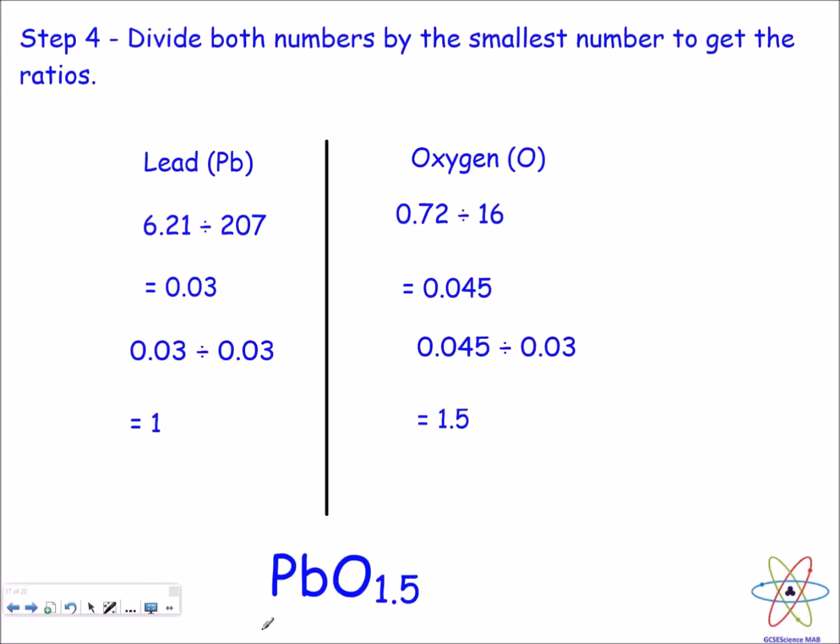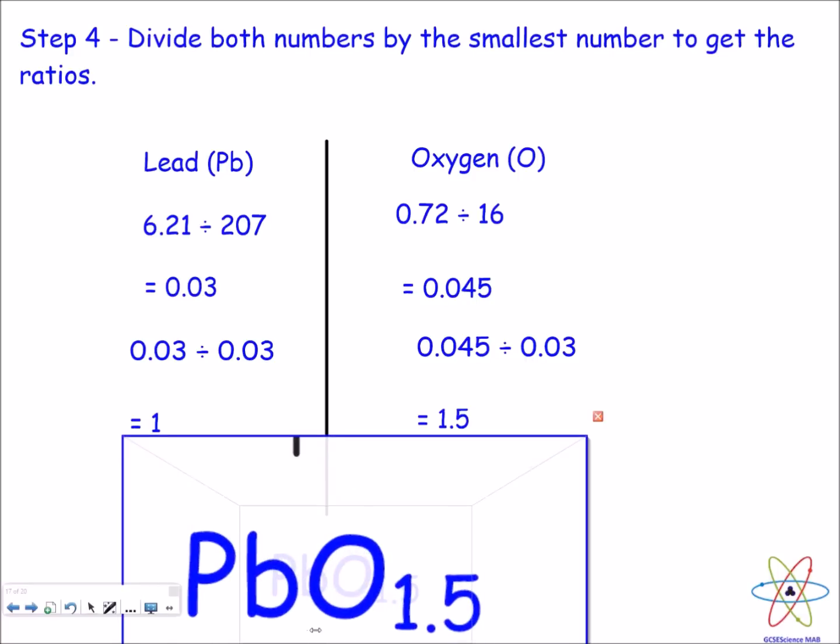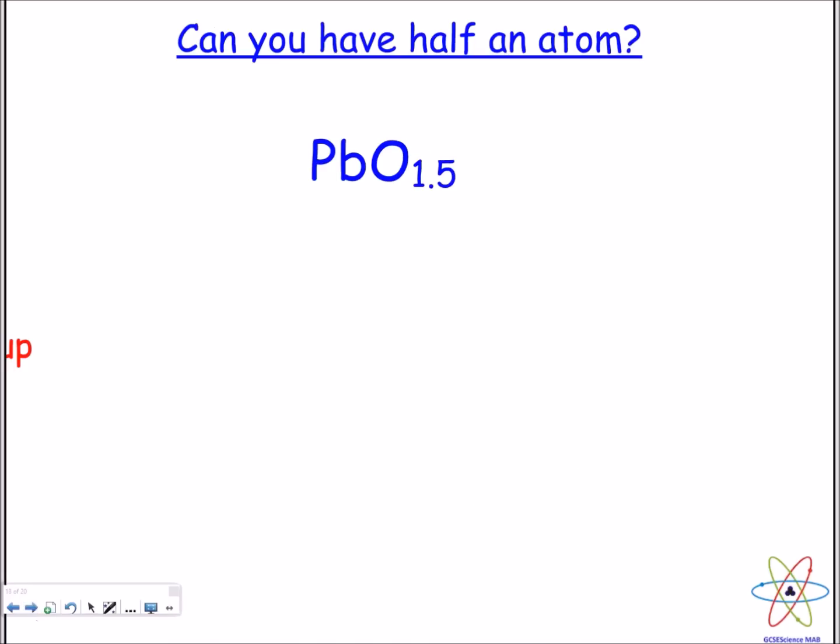So what does that mean? So our formula now looks like this: we've got PbO1.5, so we've got one lead and one and a half oxygen. Now that raises the question: can you have one and a half oxygen?